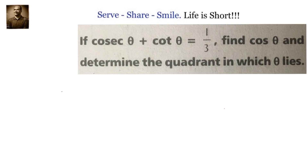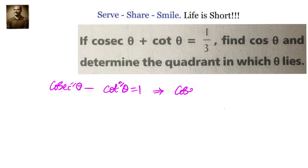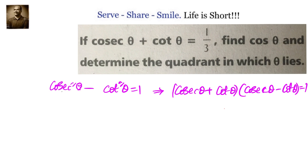What is the identity we have related to cosecant and cot? We have cosecant squared theta minus cot squared theta equals 1. That means cosecant theta plus cot theta, multiplied by cosecant theta minus cot theta, equals 1, because a squared minus b squared equals a plus b times a minus b.